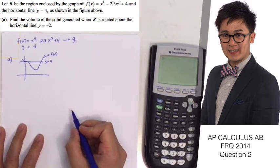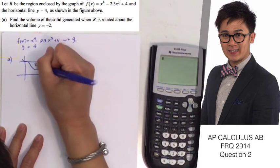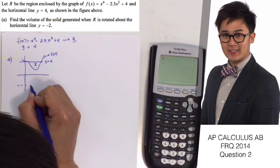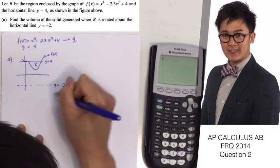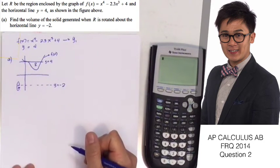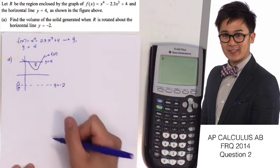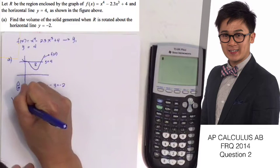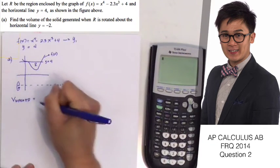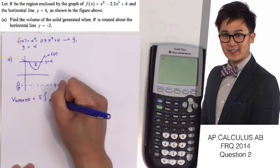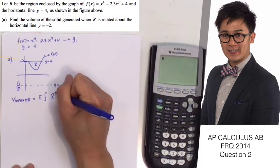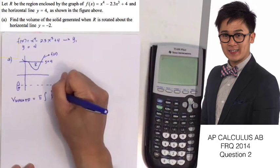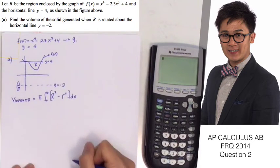Let's answer the question, which is finding the volume of R rotated about the horizontal line y = -2. This is y = -2, and we're going to rotate about this line. In this case, we're going to have a solid figure with a hole, and we're going to compute the volume using the washer method.